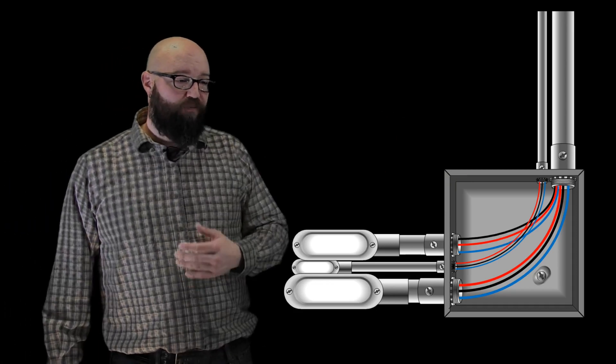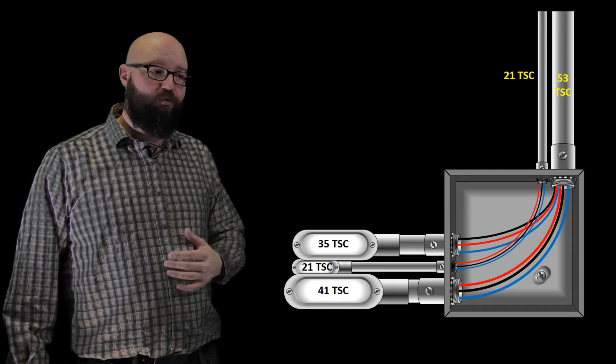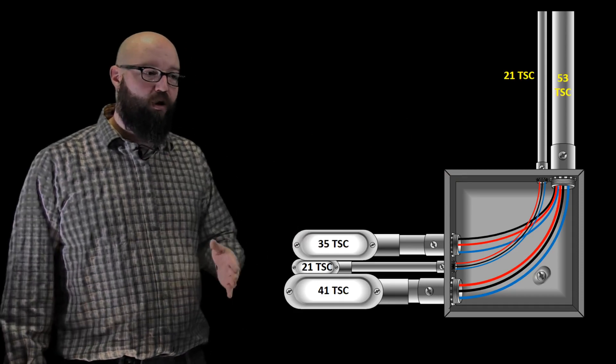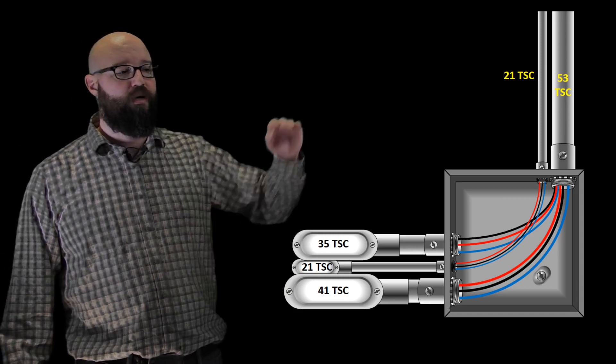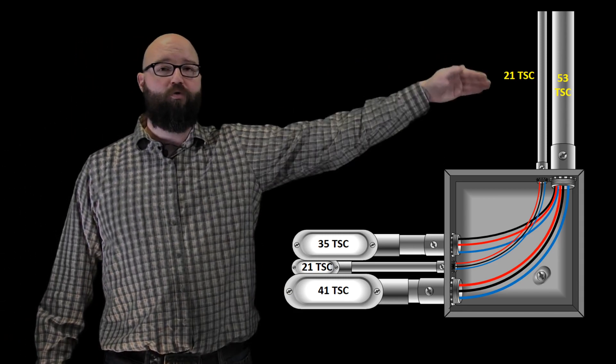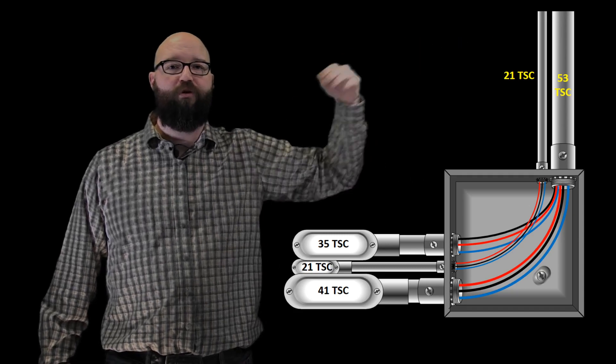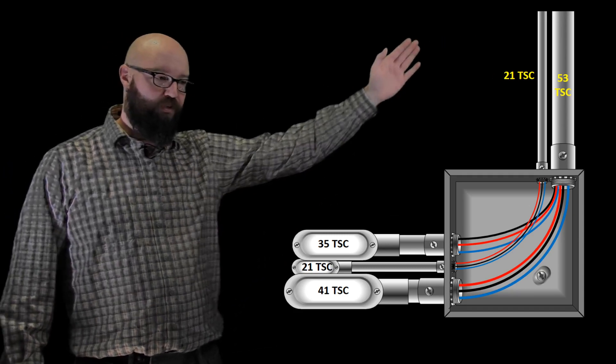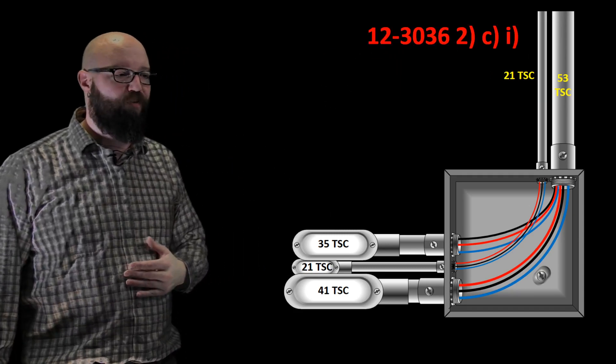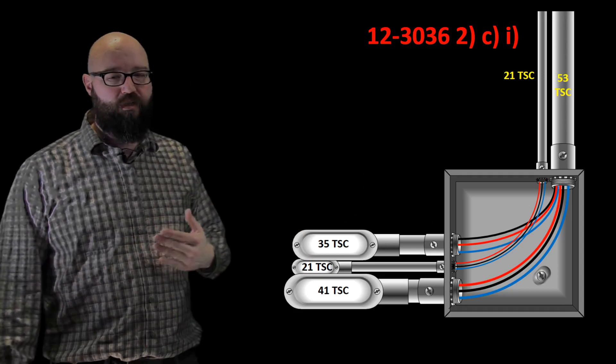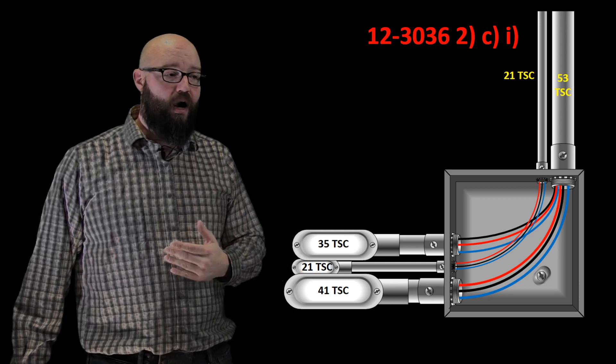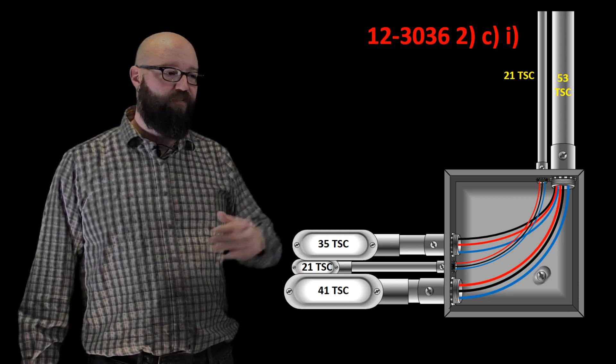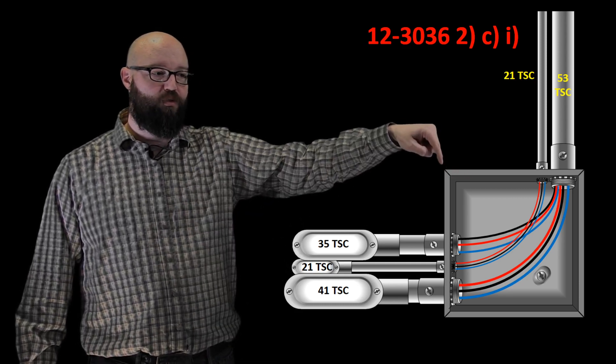So the first dimension that we're gonna focus on, if we look at 12-3036, we have all of our conduits here listed. We have our 41, 21, 35 trade size conduit, and then on this adjacent wall we have our 21 trade size conduit and our 53 trade size conduit is the furthest there. So we're gonna focus on 12-3036 Sub Rule 2 Item C Item I first, which tells me what I want to do essentially is if I look at this wall right here, we're gonna look at this wall first.